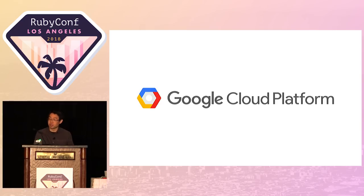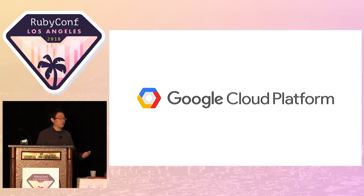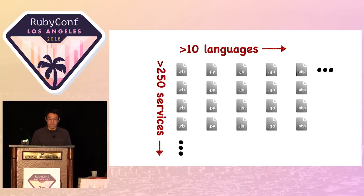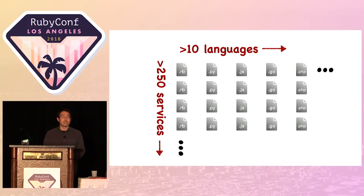Google is a large company with lots of products and lots of APIs. We have several hundred public APIs right now. We provide client libraries for all of those APIs — several hundred services. And if you multiply that by the number of programming languages we support, that's a lot of code to maintain.